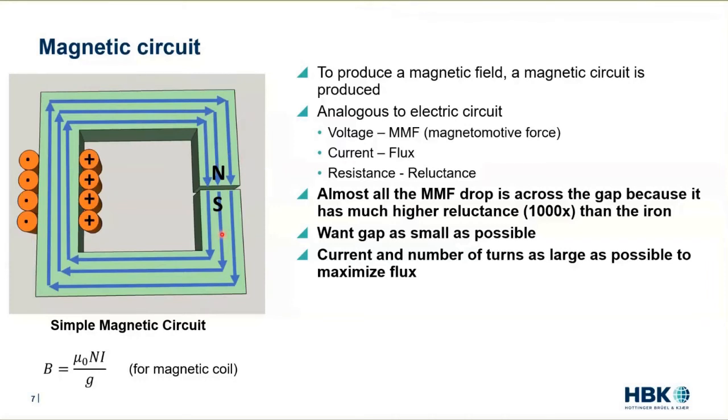Basically what we have is we have MMF, it causes flux, and the amount of flux it creates is a function of how much reluctance there is. The MMF drop is greatest across the gap because...